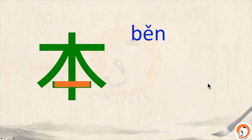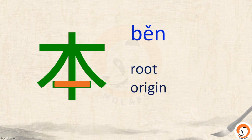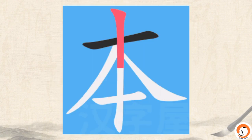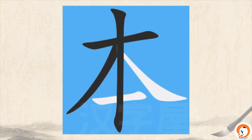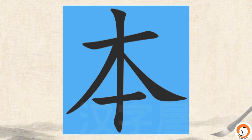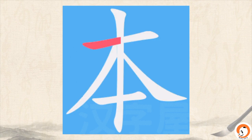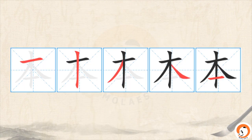This character 本 — we can refer to this line as the root of this tree, meaning root or origin. 本. 一, 二, 三, 四, 五 — also five strokes. Let's write together: 一, 二, 三, 四, 五. 本.